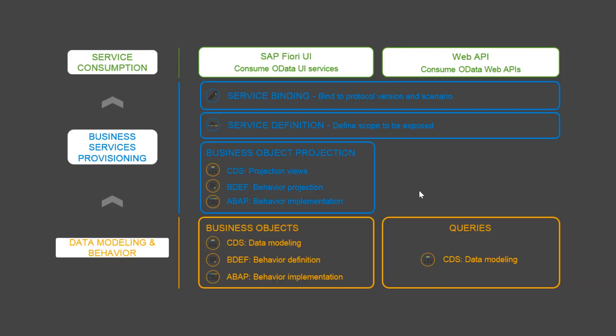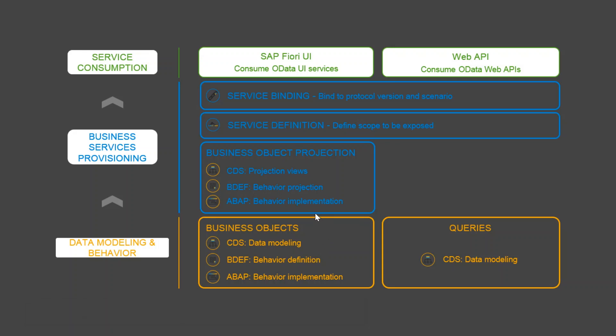So far we have discussed about behavior definition and data modeling, but we haven't seen what behavior implementation is. Behavior implementation is the place where we actually write code which will execute when you perform a specific action on the application. Our requirement is to add a button called Complete.